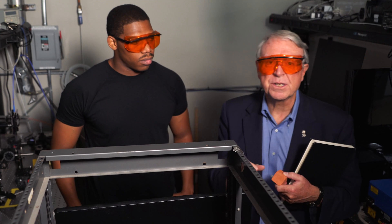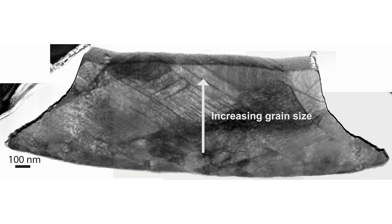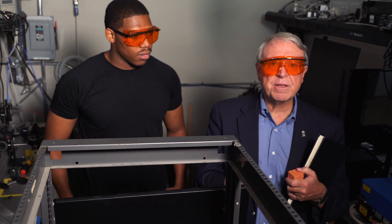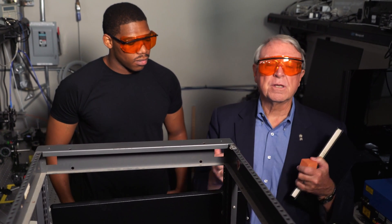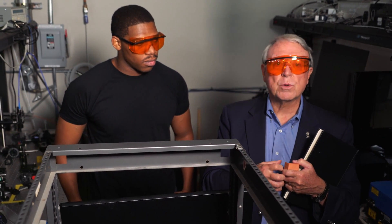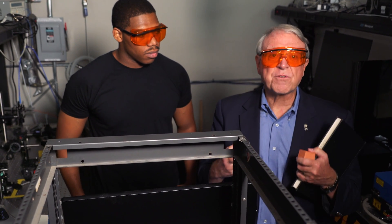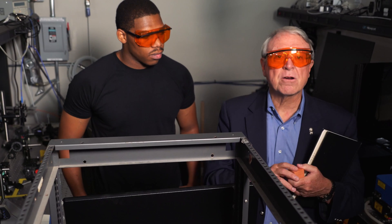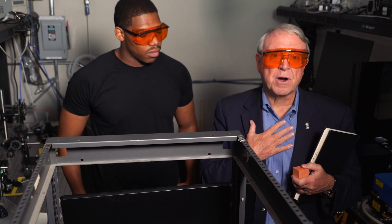The reason we're doing this is because we're trying to make a gradient nanostructure, because we believe that will improve mechanical properties. In mechanical properties, the things most people care about are strength and toughness. Strength is the ability for the material to withstand stress and not deform. Toughness is the ability of the material to absorb a lot of energy so it doesn't fracture right away — giving you a lot of protection, like in a car crash or bulletproof armor.